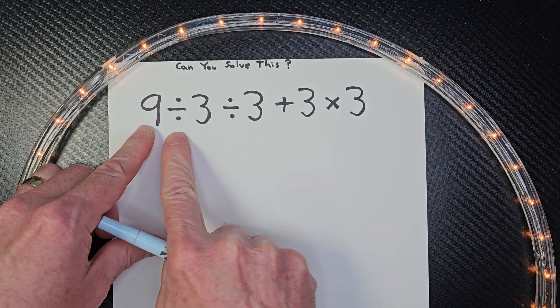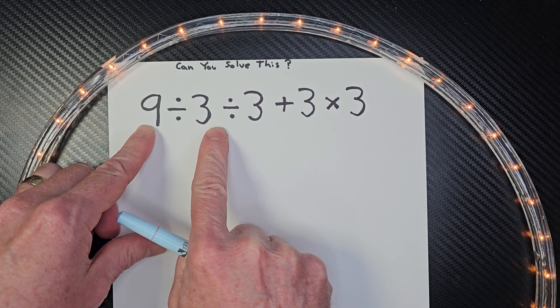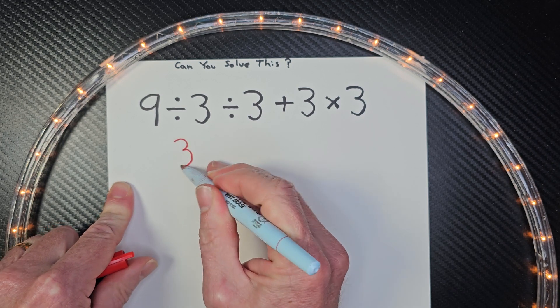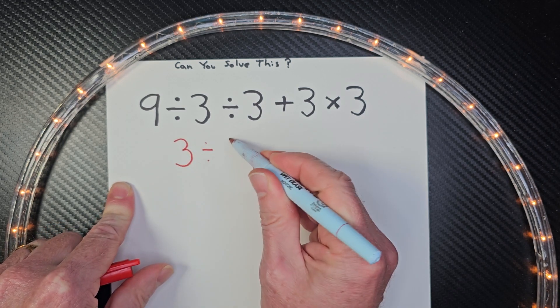So we have this part we need to do first. 9 divided by 3. 9 divided by 3 would be 3, and I'm just going to go ahead and rewrite this problem out.